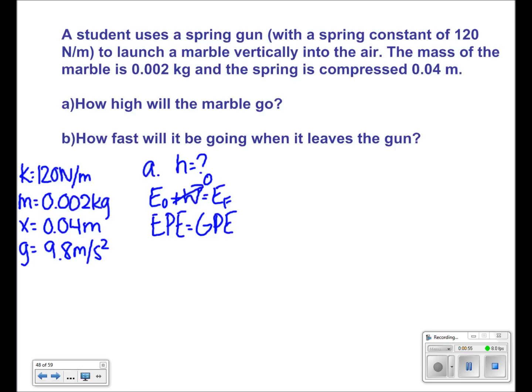So one-half kx squared is equal to mgh. Since we're solving for h, we divide both sides by mg. So we get that h is equal to kx squared over 2mg.